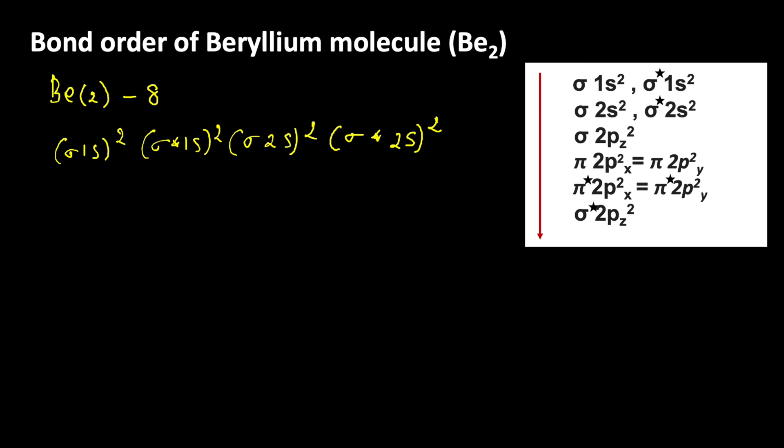Using this, let us write the bond order. Bond order is equal to Nb minus Na by 2. Nb is the number of bonding electrons, Na is the number of anti-bonding electrons. The electrons present in sigma 1s and sigma 2s orbitals are called bonding electrons. The electrons present in sigma star 1s and sigma star 2s orbitals are called anti-bonding electrons.